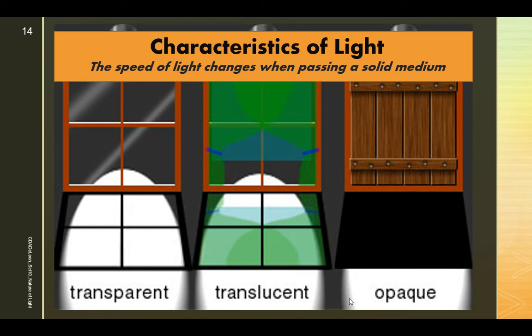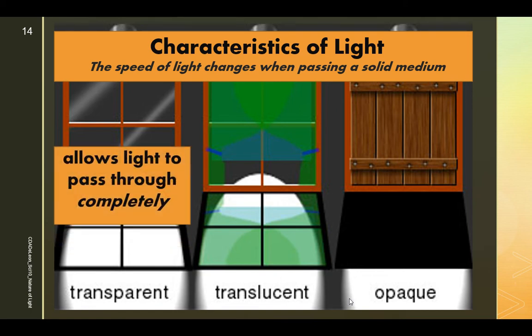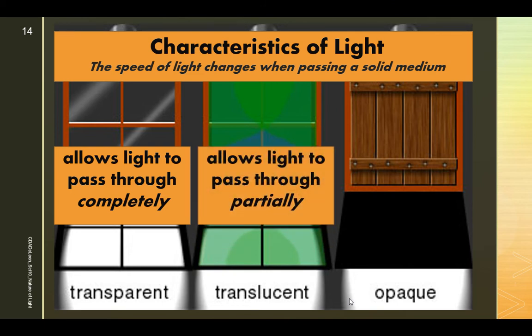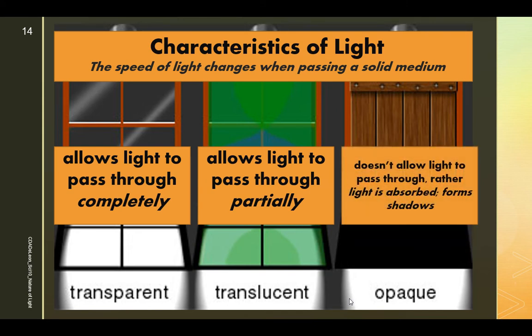We have characteristics of light. The characteristics of light describe how light behaves or how the speed of light changes when passing through a solid medium. We have three types of characteristics. First is transparent, which allows light to pass through completely. Translucent allows light to pass through partially. And opaque does not allow light to pass through; rather, light is absorbed and forms shadows. When you enter a church, you can see stained glass - that's an example of translucent. We also have plastic coverings or glass panels - that's an example of transparent materials. All solid materials that cast shadows are examples of opaque materials.